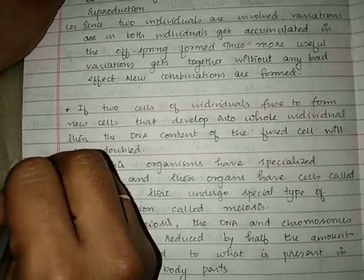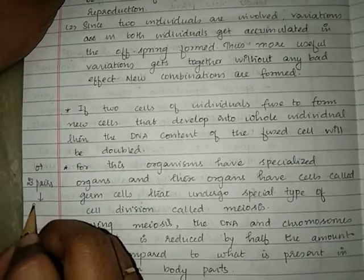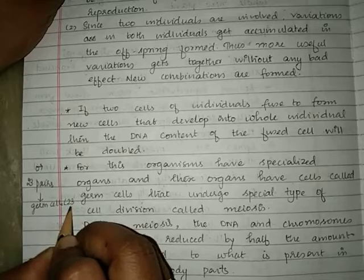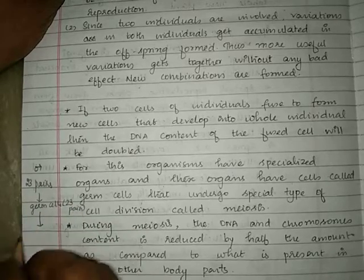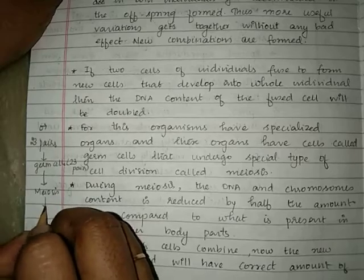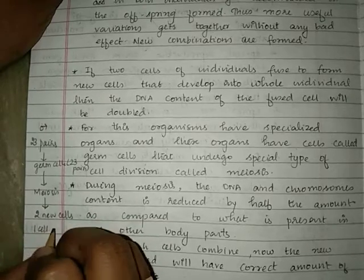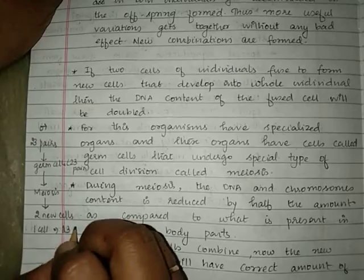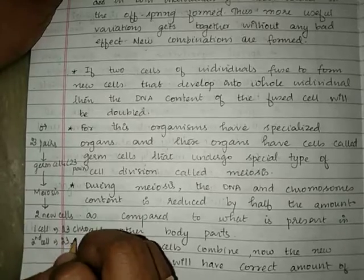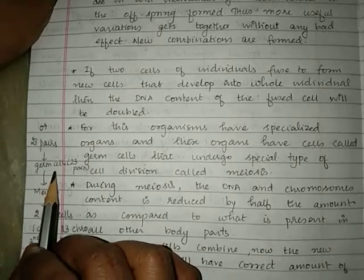Humans have 23 pairs of chromosomes. Suppose we consider the male: after meiosis, one cell will have one set of 23 chromosomes, and the second cell will have the remaining 23 chromosomes. So 23 pairs become two cells each with 23 chromosomes. This is how germ cells are formed.